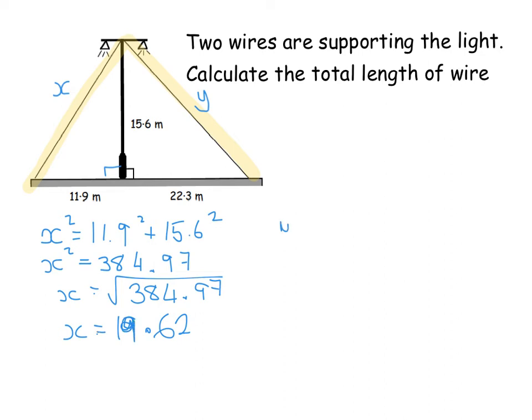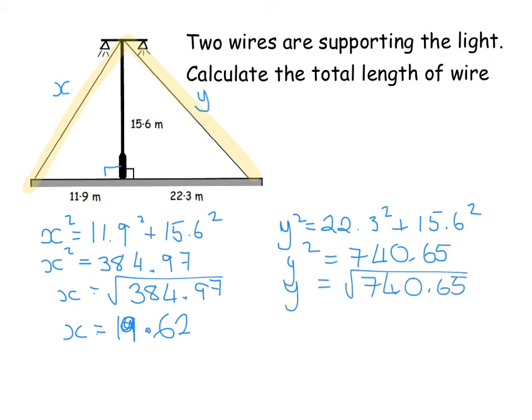Doing the triangle on the right hand side, Y squared will be the 22.3 squared and the 15.6 squared. Type that straight into the calculator. You get 740.65. Remember you have to square root that. And to two decimal places, that gives us 27.21. So the total wire is your two answers added together. So we're just going to do X plus Y, which is 46.83 meters.